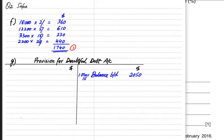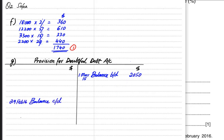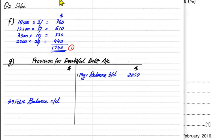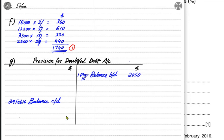If the opening provision is credit, then the closing provision would be debit — the balance carried down would be here. We have already calculated the provision at the end of the year as 1,740. If the opening provision is 2,050, the closing would be 1,740.